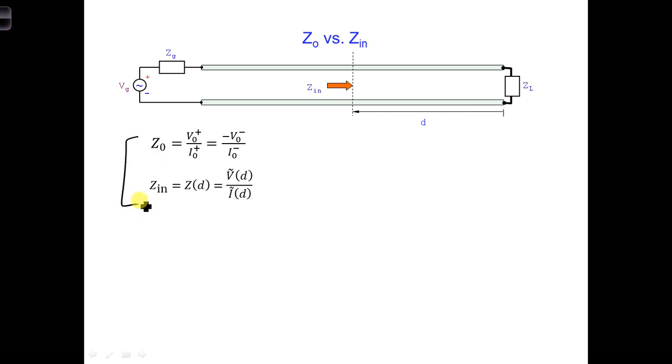The characteristic impedance, Z-naught, only relates a positive traveling wave, a positive traveling voltage wave, to a positive traveling current wave. So we use it here to relate V-naught-plus to I-naught-plus. Remember back in the time domain we said Z-naught is V1-plus to I1-plus. We could also say it's equal to V1-minus over I1-minus. So individually traveling voltage and current waves.